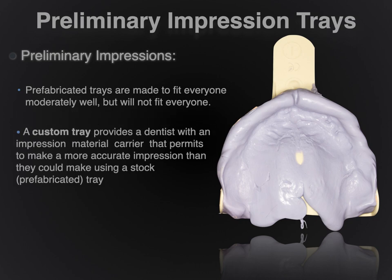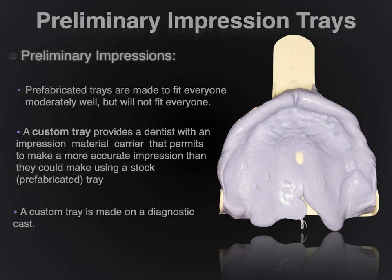A custom tray provides the dentist with an impression material carrier that permits making a more accurate impression than could be made using a stock prefabricated tray. A custom tray is made on the diagnostic cast, also referred to as your preliminary cast, which you have obtained by pouring your preliminary impressions. So we're now making our way toward the fabrication of a custom tray.